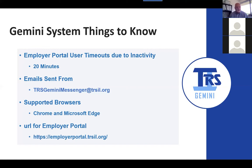You're going to get emails through the registration process. Every time you sign on, the multi-factor authentication process will send emails with security codes. Those will come from the address trsgeminimessenger@trsil.org — an address you'll want to take away from this training. Go to your IT people and make sure that address is whitelisted so those emails are not flagged as spam or quarantined. It should be a trusted source.